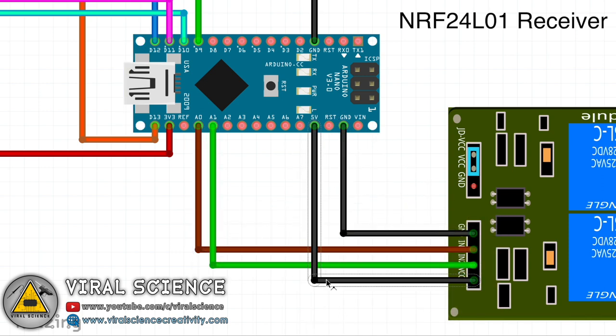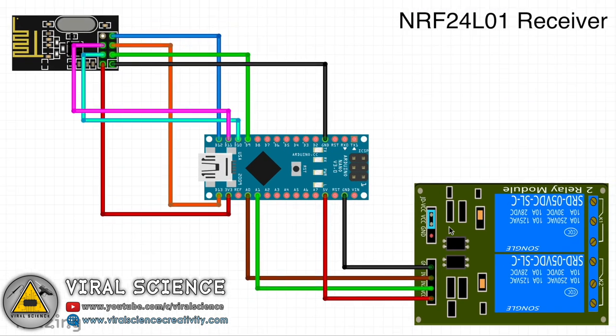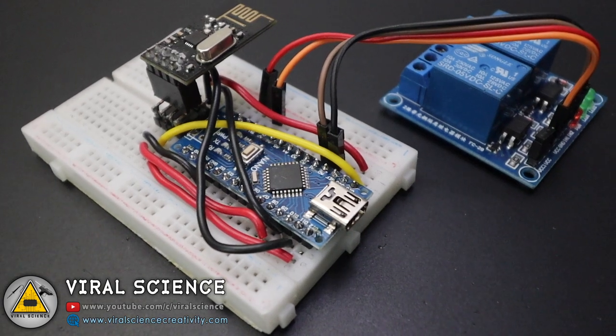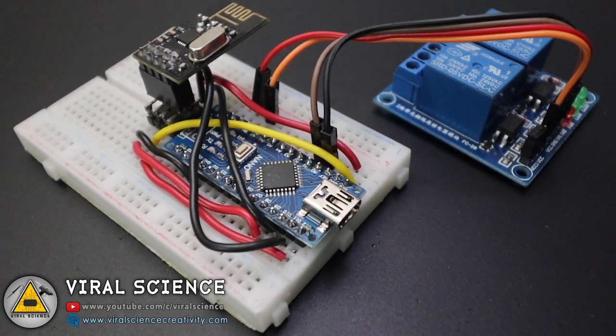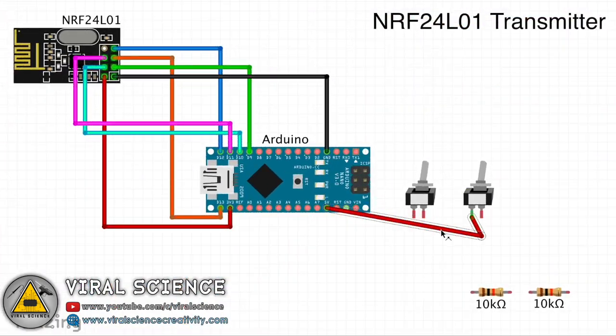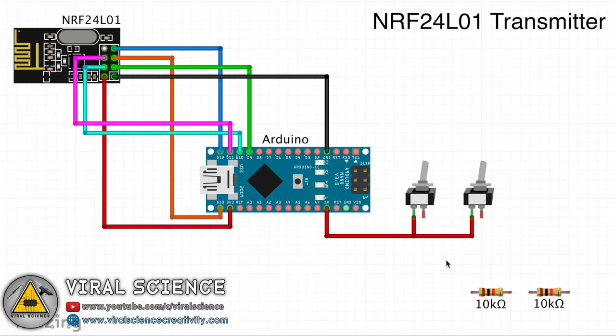I have connected everything according to the circuit diagram, and our receiver part of the project is ready. Now we'll proceed to the transmitter section. In this, we'll be connecting two switches and two resistors to our Arduino board.